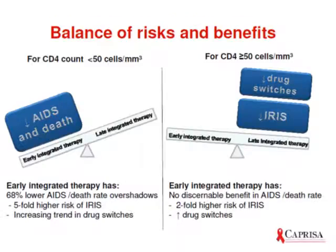This study was really looking at rebalancing these risks and benefits. Putting people on ARVs early carries a five-fold higher risk of IRIS. But with a very low CD4 count, the risk of death is higher. With a higher CD4 count, there is still an increased risk of IRIS, but waiting with ARVs carries no particular mortality risk, so it may be worthwhile to wait past the period when IRIS risk is highest.